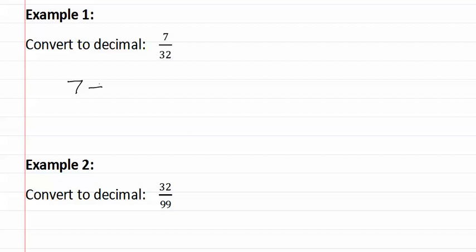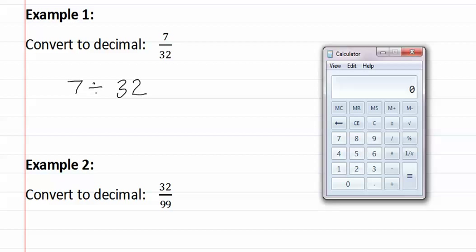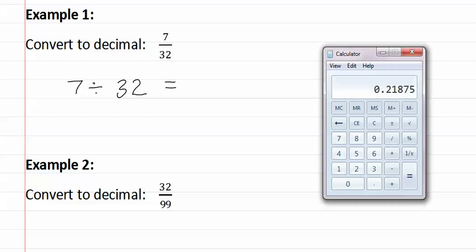So we start by saying it is seven divided by thirty-two. We can then use a calculator to determine this. If we do seven divided by thirty-two, we get 0.21875.